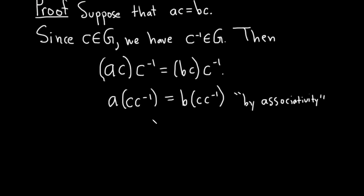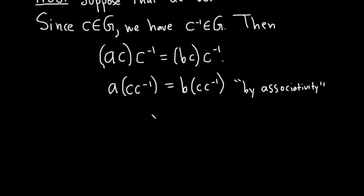And because c inverse is the inverse of c, when you multiply them together, you get the identity. So this is ae equals be. And this step is because c inverse is the inverse of c.